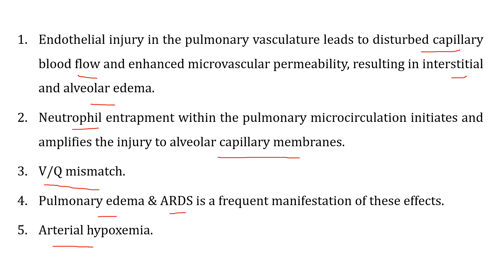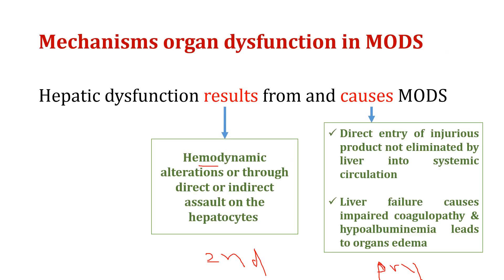Finally, arterial hypoxemia will develop. Regarding hepatic dysfunction, it can cause primary MODS or result from hemodynamic alteration in the liver — either direct or indirect insult to the hepatocytes — leading to secondary MODS. If there is direct injury or direct infection of the liver circulation, it will affect liver function. The liver is a detox organ responsible for removing toxins from the body, so impairment of liver circulation or liver failure will cause primary MODS.